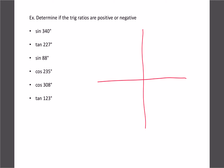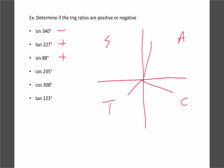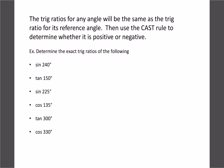Quick practice — just determine positive or negative. Sine of 340 is in the C quadrant, so negative. Tan of 227 is in the T quadrant, so positive. Cosine of 88 is in quadrant 1, so positive. Cosine of 235 is in the T quadrant, so negative. Cosine of 308 is in the C quadrant, so positive. And sine of 123 is in the S quadrant — wait, that's quadrant 2 where sine is positive, but the answer given is negative. The CAST rule tells us the sign.